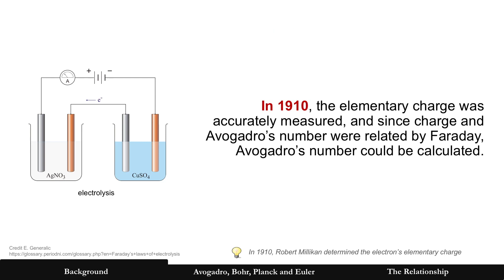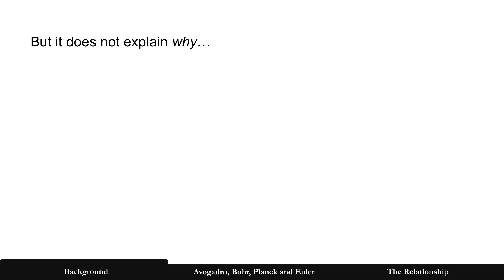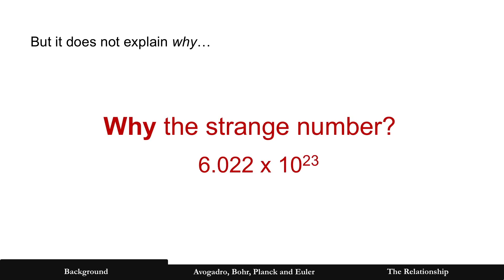Now, even though Avogadro's number was sort of estimated in the 1800s, it wasn't until 1910 when the elementary charge was accurately measured, that Avogadro's number could be refined and calculated to the number it is today. It's been refined since, but pretty accurate back then. But that still doesn't explain why. Why that strange number, 6.022 times 10 to the 23rd.